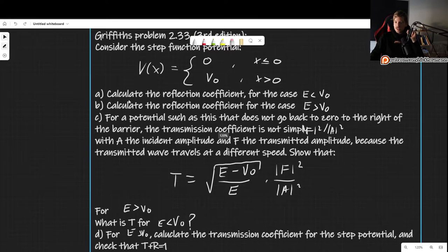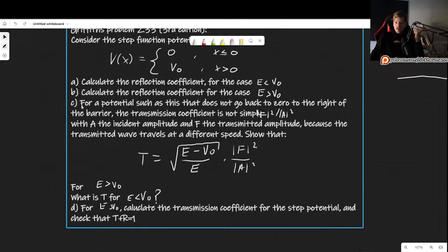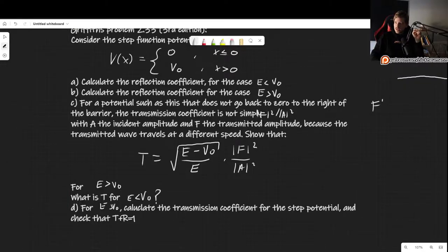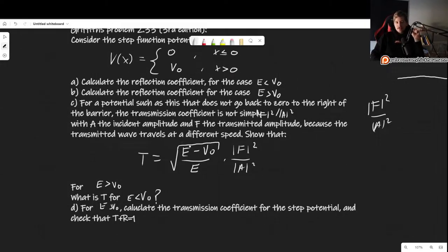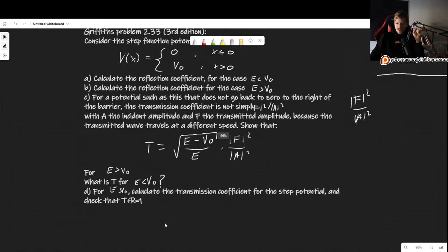We are asked to: first, find the reflection coefficient for the case e smaller than v0, and then for the case e greater than v0. We are also told that for a potential that doesn't go back to 0, the transmission coefficient is not simply the modulus of f squared divided by a squared, because the transmitted wave travels at a different speed. We need to show the corrected form of the transmission coefficient.